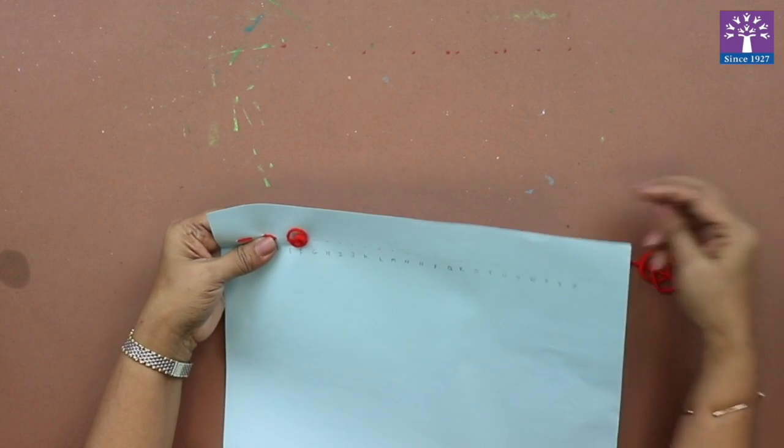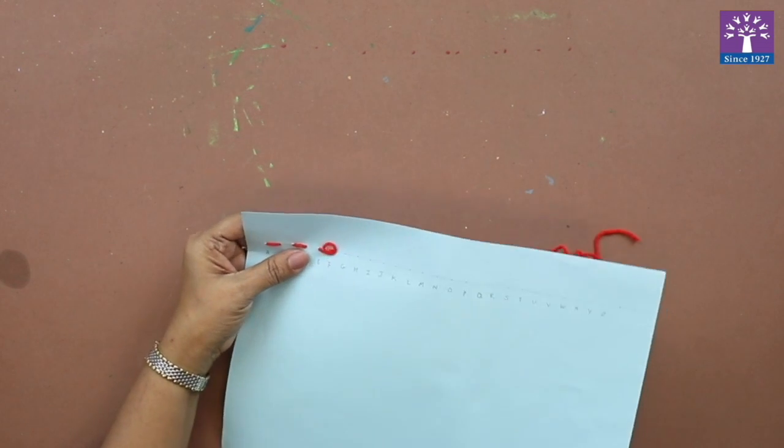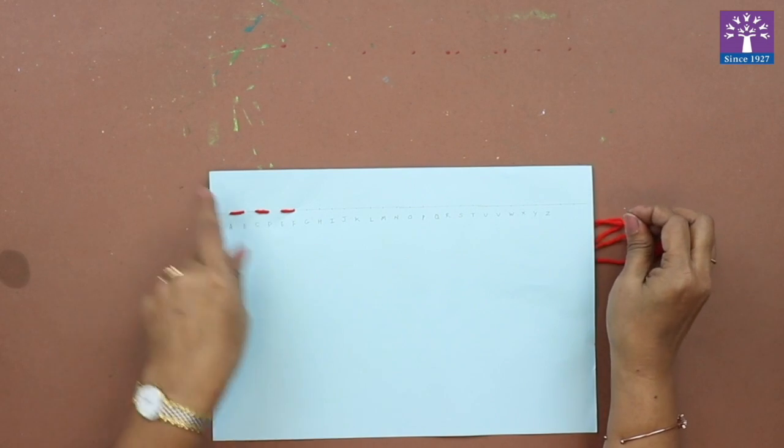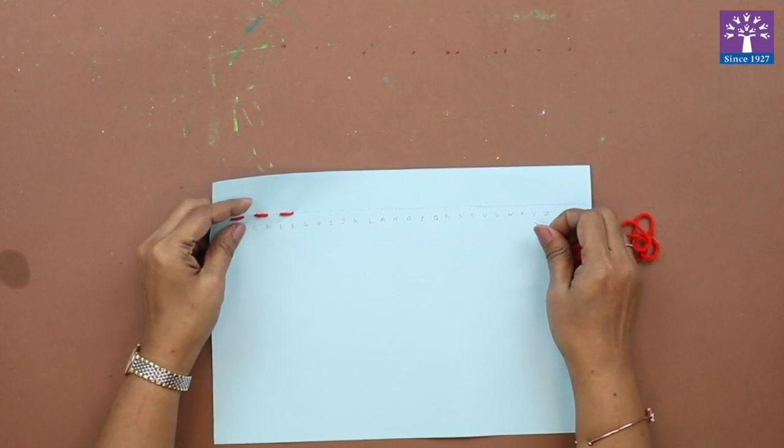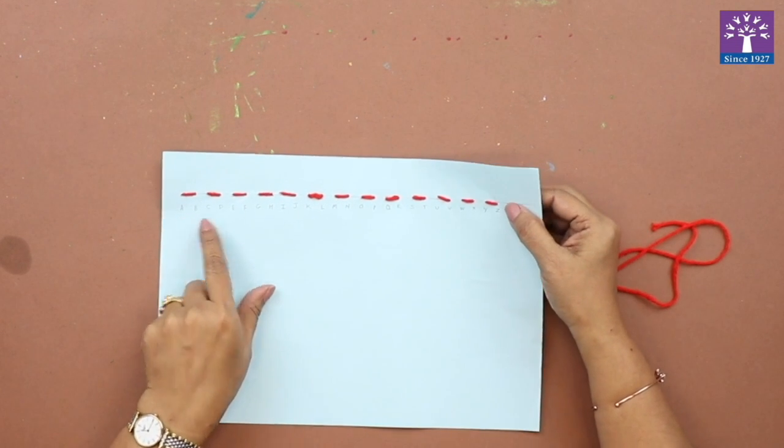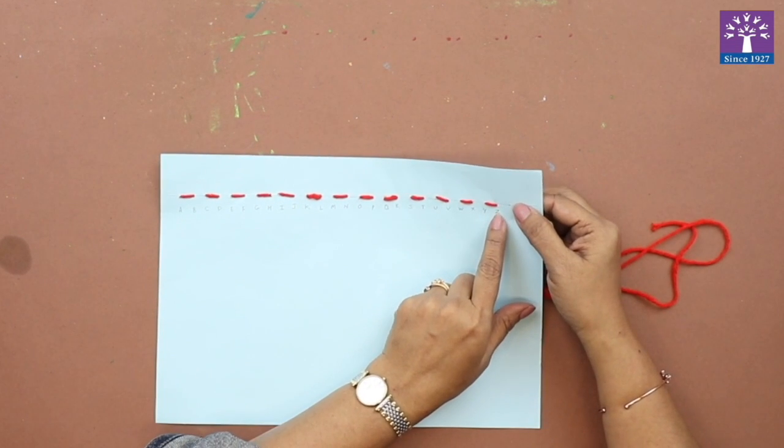You can continue this for all the points till the end. This is a running stitch. So we've finished our running stitch till the marking that we have made.